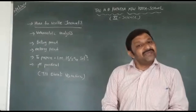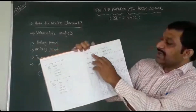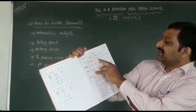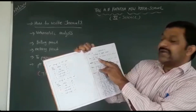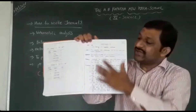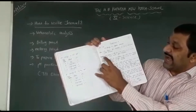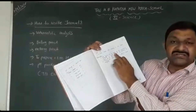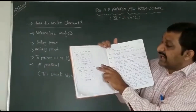The last practical is the pH practical. The aim is: to observe the variation in pH of acid and base with dilution. Write aim, apparatus, theory, procedure, and precaution in the single line page. In the blank page, draw a table showing color and pH values.